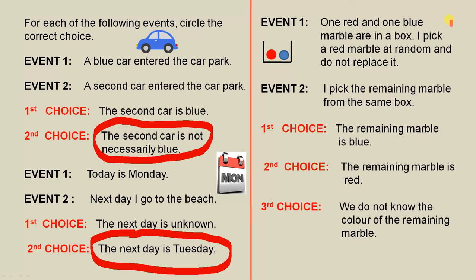Here's another example. One red and one blue marble are in a box. I pick a red marble at random and do not replace it — I close my eyes, put my hand in the box, pick a red marble and keep it. Event two: I pick the remaining marble from the box. We have three choices: the remaining marble is blue, the remaining marble is red, or we do not know the colour of the remaining marble. The correct answer is the remaining marble is blue.